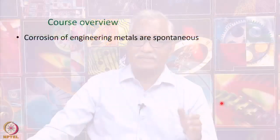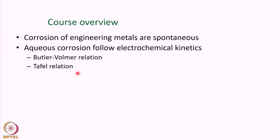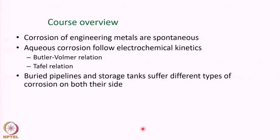Before ending this course, let me give a brief overview. Corrosion of engineering metals is spontaneous — no external force or energy is required when they are exposed to a chemical environment. Aqueous corrosion follows electrochemical kinetics: broadly the Butler-Volmer relationship over a range of potentials, and the Tafel relationship over a narrow range of potentials. In cathodic protection, aqueous corrosion follows the Tafel relationship.